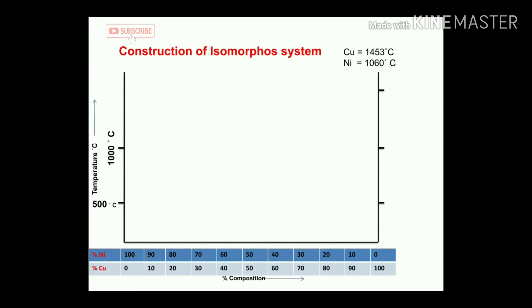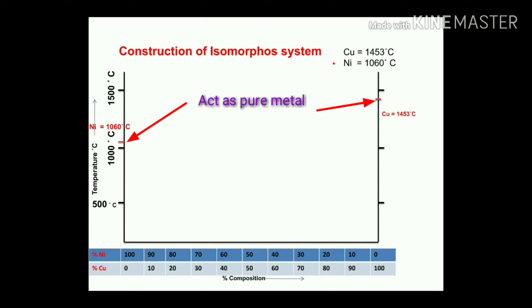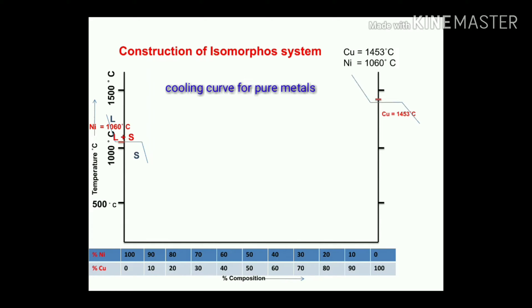The temperature scale on the y-axis goes up to 1500°C. The melting point of 100% nickel is 1060°C and 100% copper is 1453°C — both acting as pure metals. For a pure metal, the cooling curve shows: liquid, then liquid plus solid, then solid.